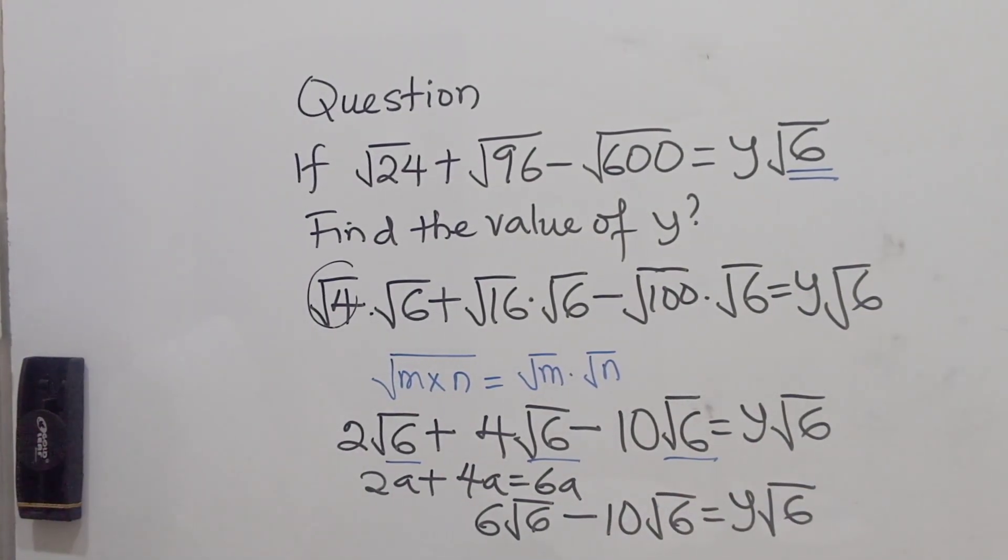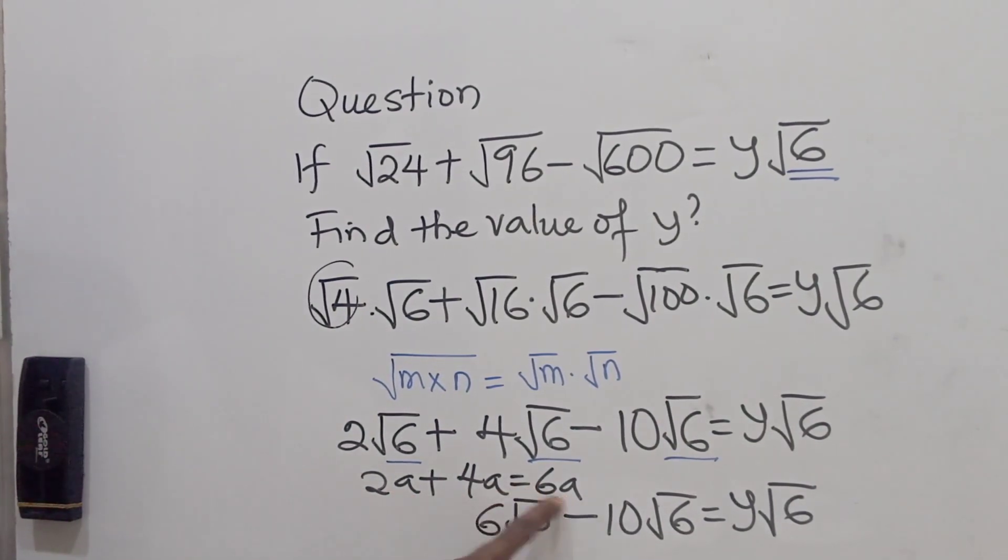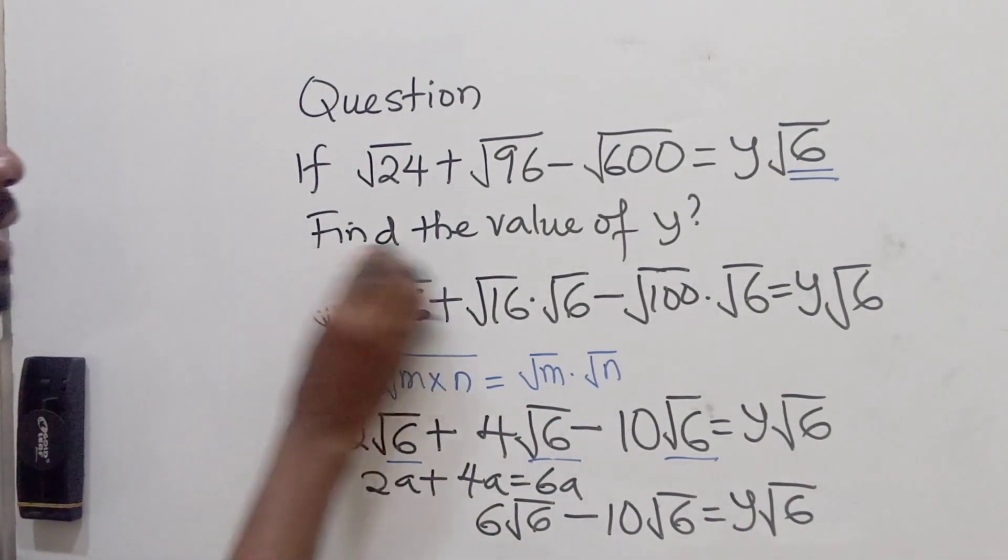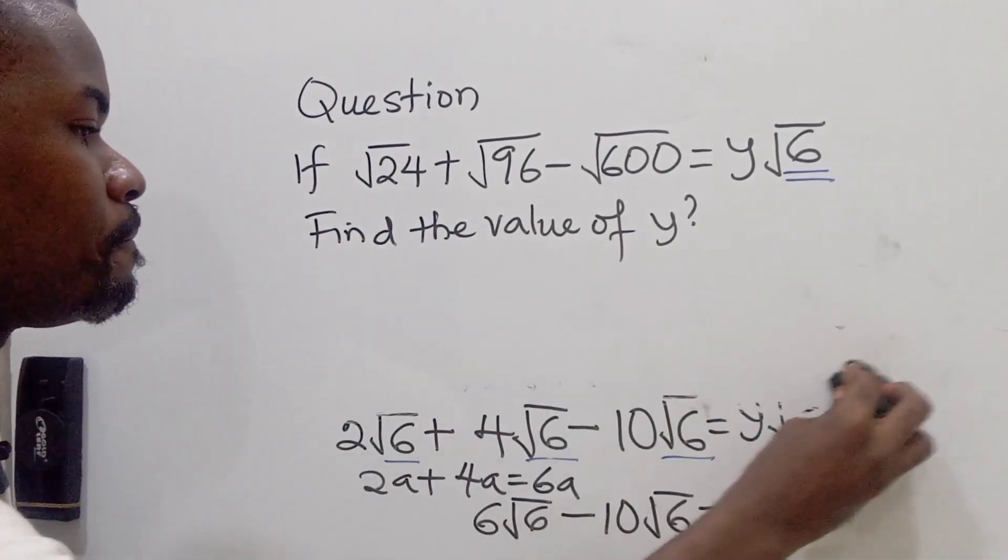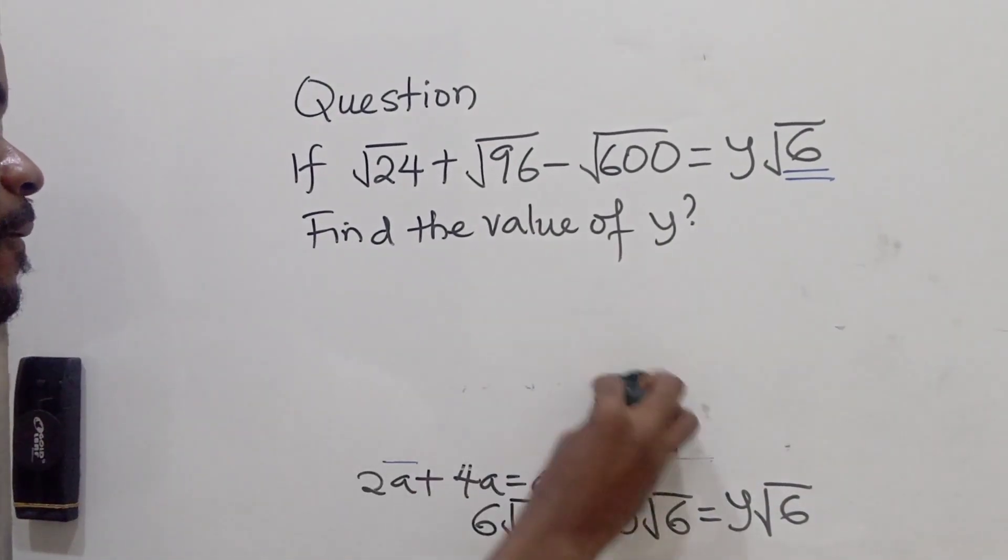Most times, when you are treating surds, you treat them like algebra. Just like 2a plus 4a would give us 6a. So 2 root 6 plus 4 root 6 will give us 2 plus 4, which is 6 root 6. So at this point, we can now simplify further.